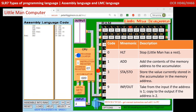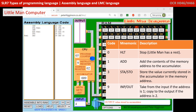We fetch the next instruction, incrementing the program counter. This is instruction 902, and we can see from the table this is going to output the contents of the accumulator. So we decode it, grab the content of the accumulator, and output it.